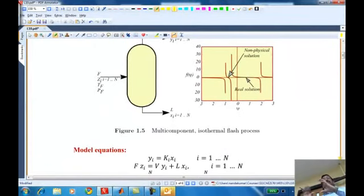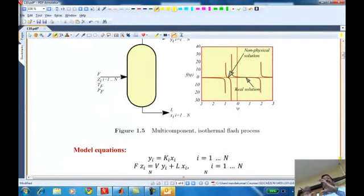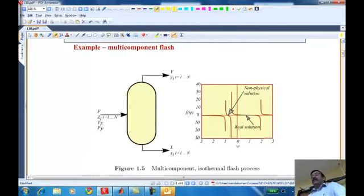Let me first start with an example, and we will solve it using the bisection method. Then we will also solve some other examples from the last class using bisection, so we will learn how the bisection method responds to various situations. This is a chemical engineering problem called a multi-component flash — a very common device you'll find in refineries and gas processing plants.